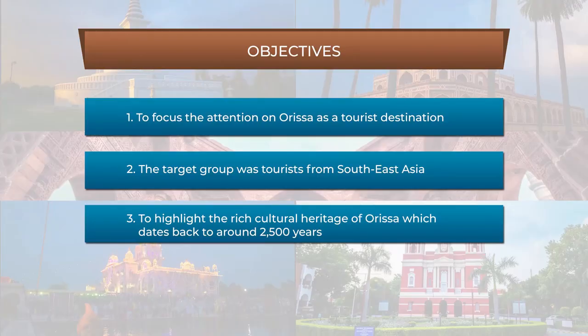The objective behind organizing the Yatra was mainly to focus the attention of tourists on Orissa as an upcoming destination in India. The target group that Orissa had focused on was inbound travelers from Southeast Asia. The attempt was made to highlight the rich cultural heritage of Orissa, which dates back to around 2,500 years. The planning began in the year 1992.